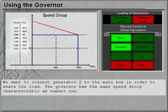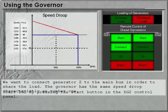We want to connect generator 2 to the main bus in order to share the load. The Governor has the same speed droop characteristic as number 1. Start DG2 by pressing the Start button in the DG2 control panel.